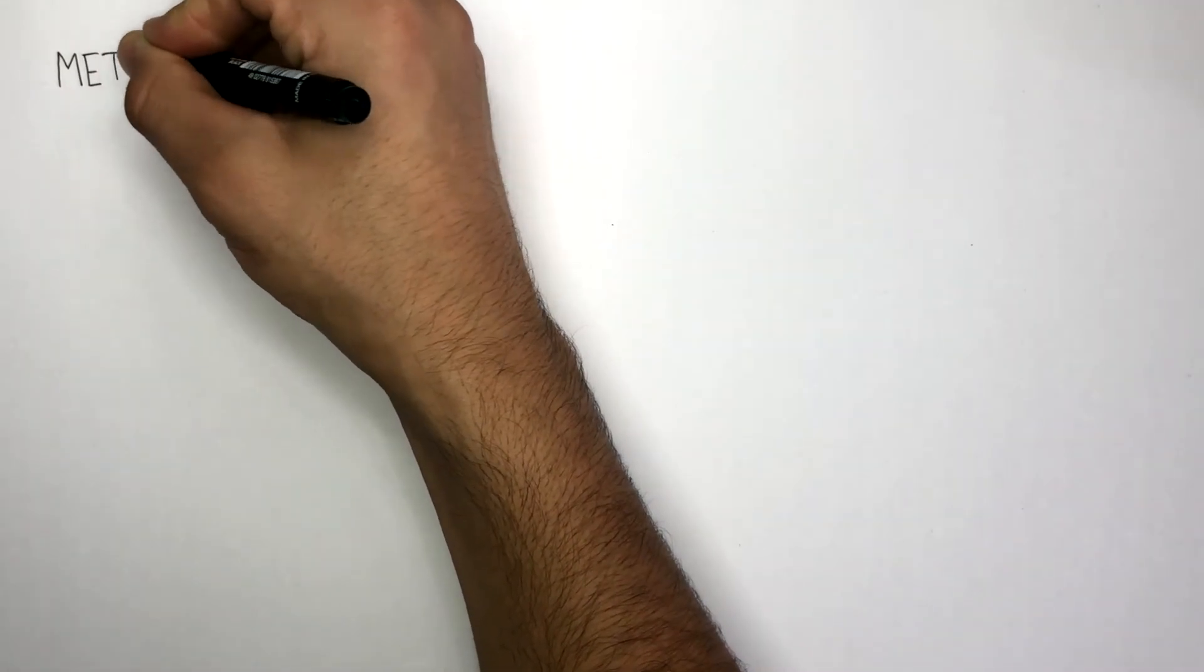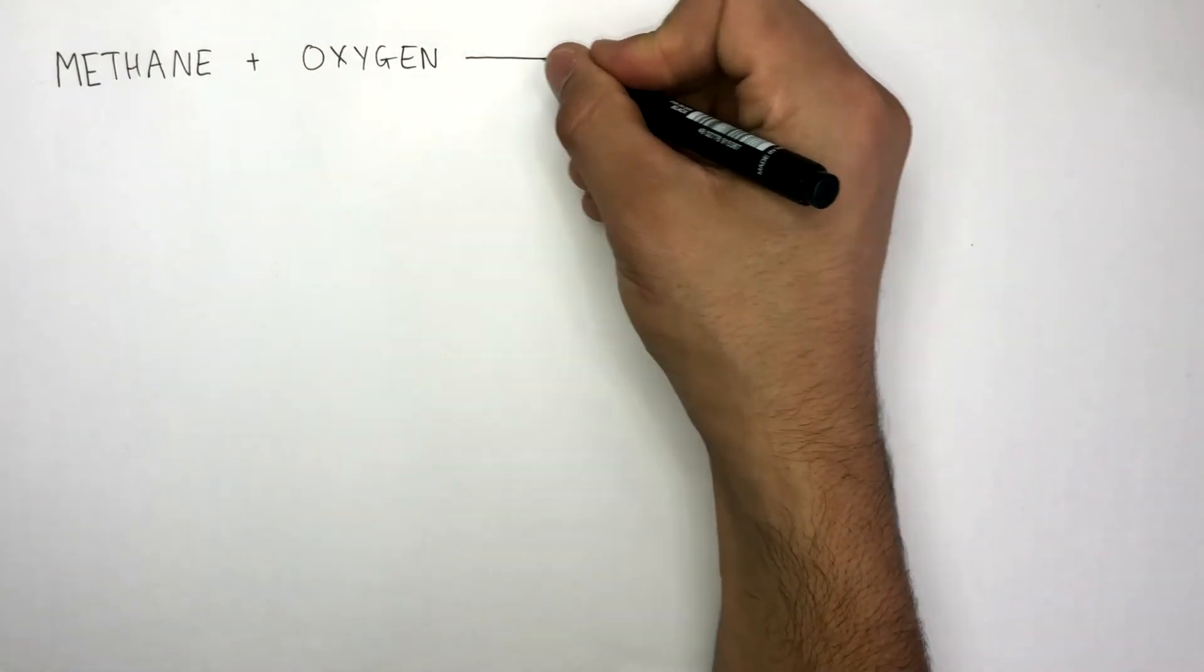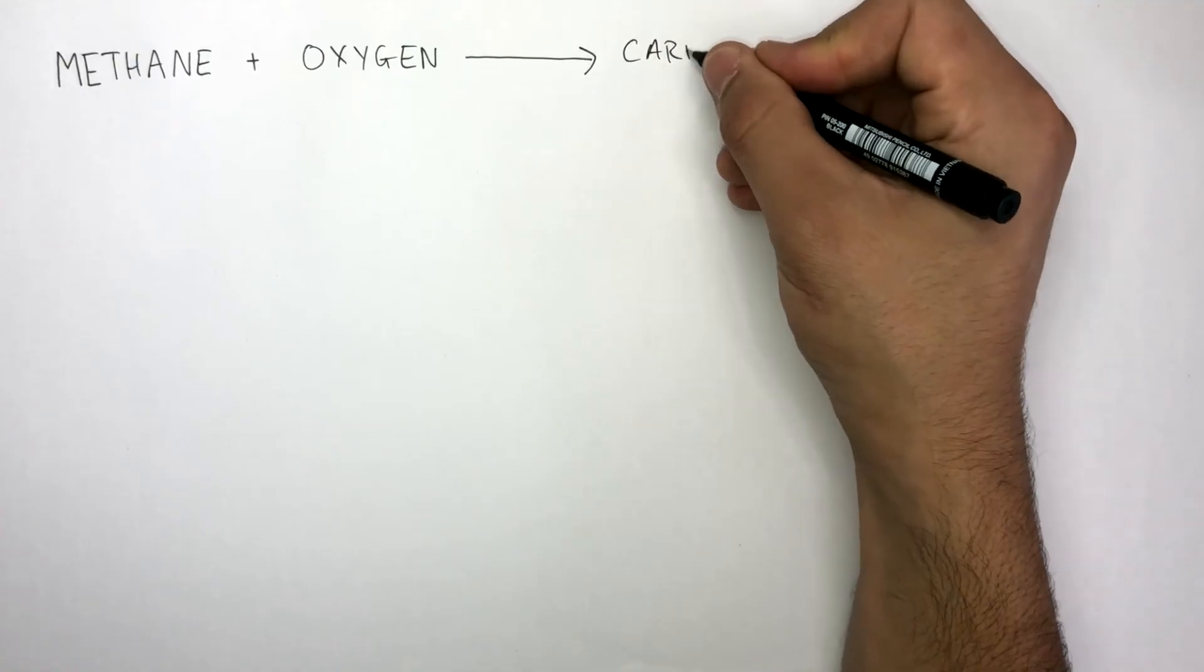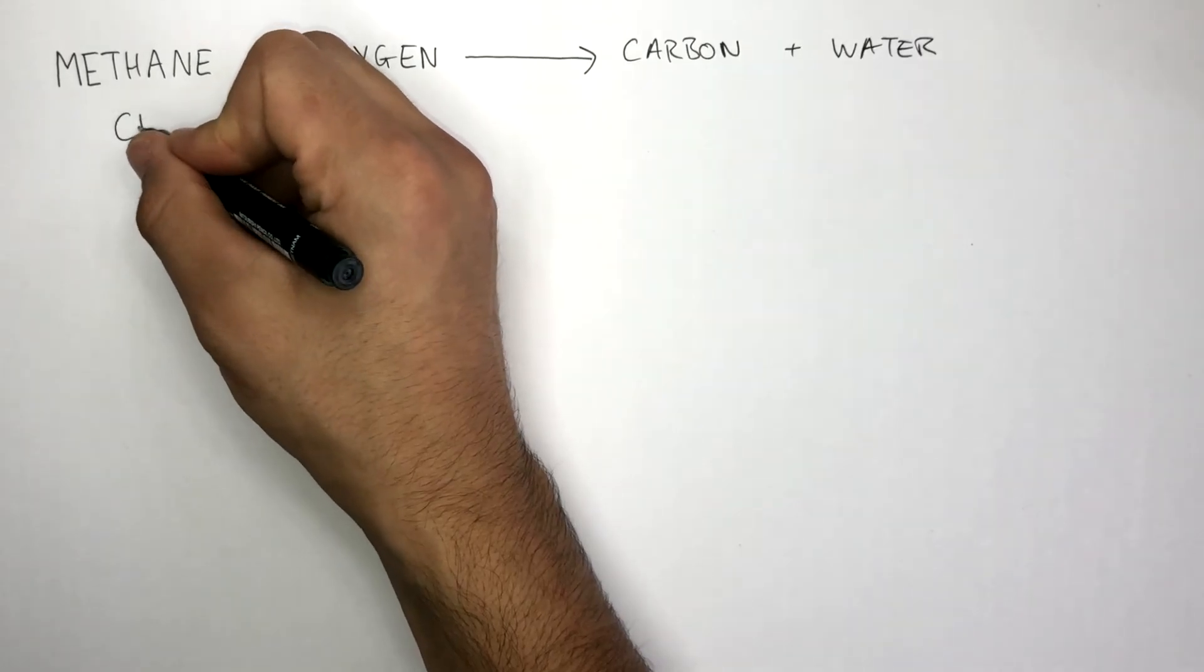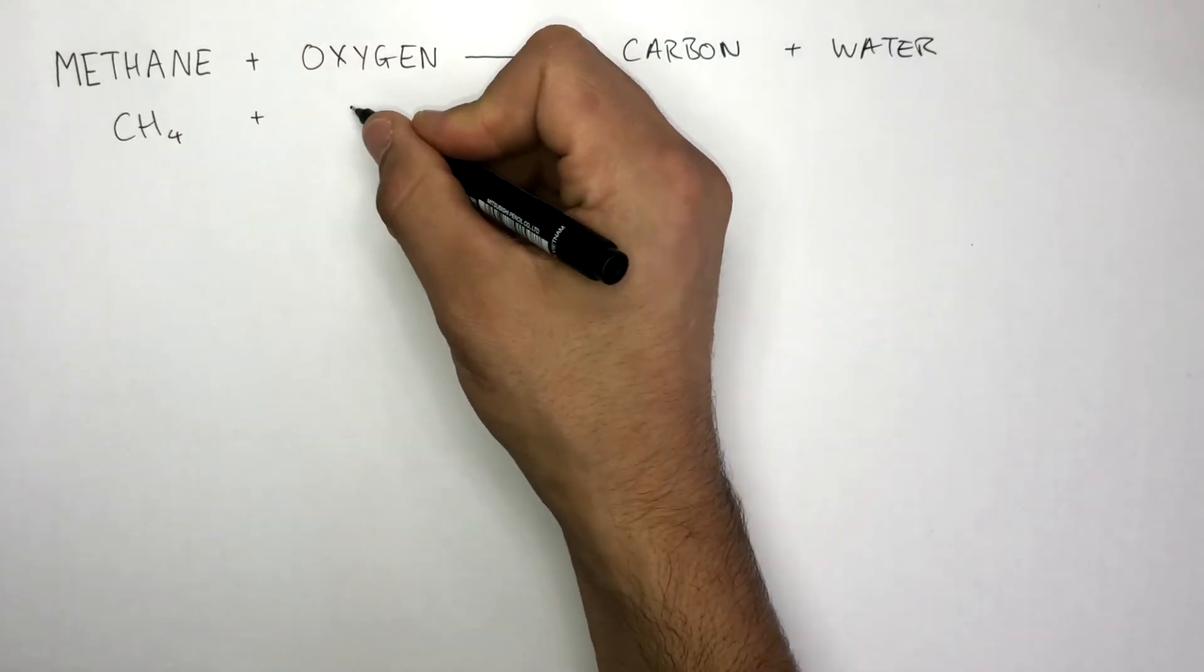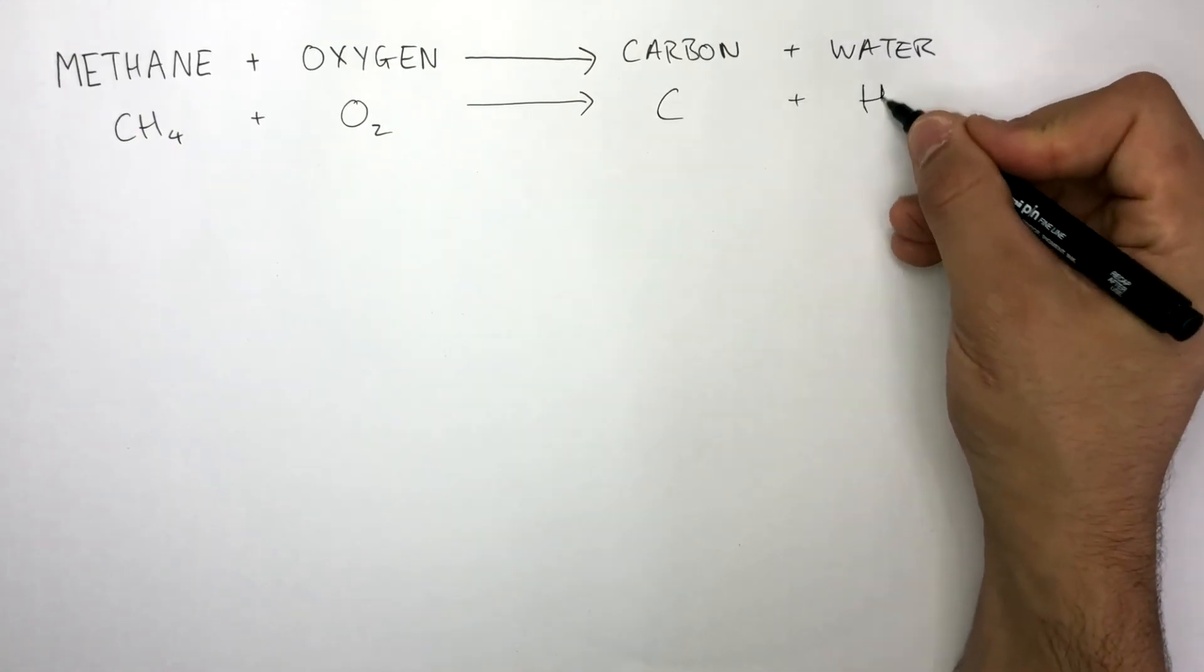This reaction shows methane reacting with even less oxygen to produce pure carbon, also known as soot, and water. The balanced equation is CH4 plus O2 goes to C and 2H2O.